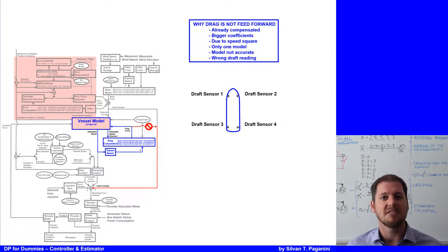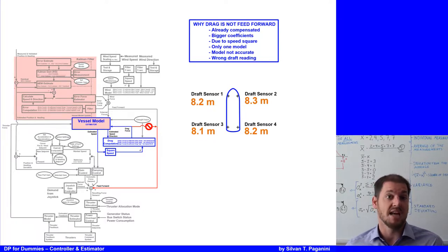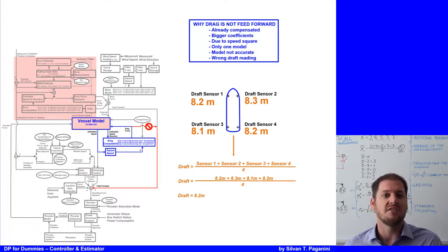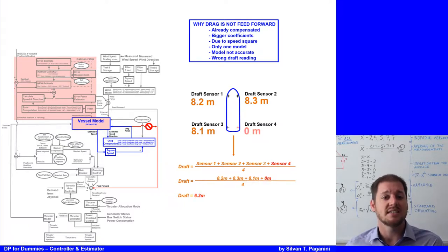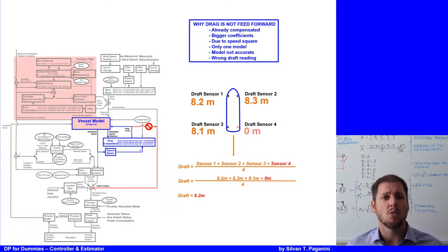Some manufacturers take the average of all draft readings. For example, four draft sensors measure 8.2, 8.3, 8.1, and 8.2 meters — giving an average of 8.2 meters. Now if one sensor fails, the average drops to 6.2 meters. The drag force would then change so drastically that the vessel could move off position. All these reasons explain why the drag force is not feed-forwarded and only goes into the vessel model — the estimator.